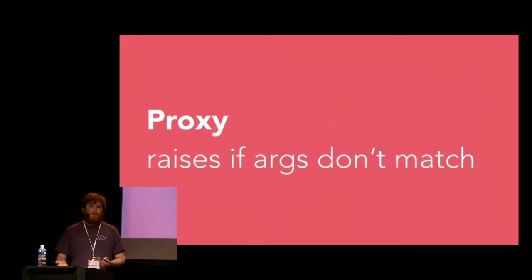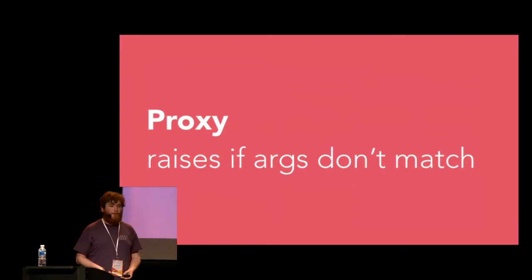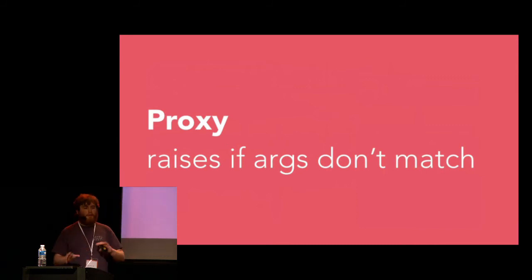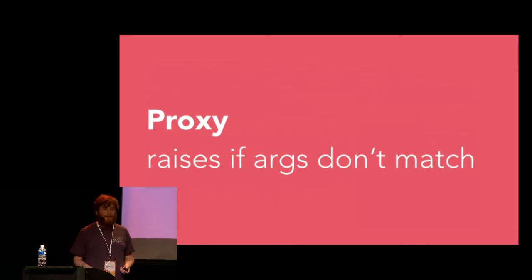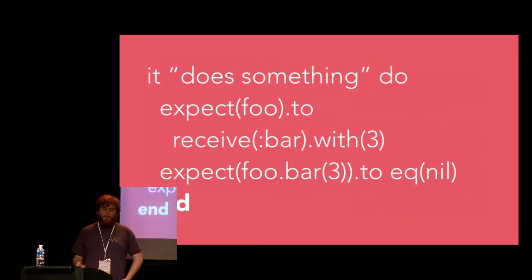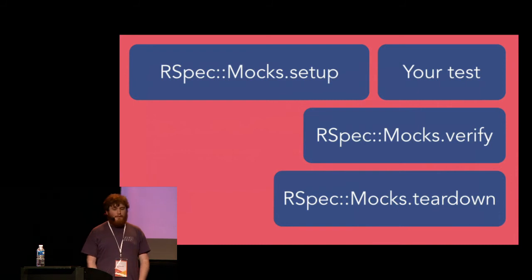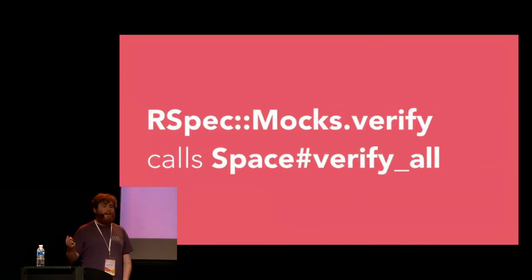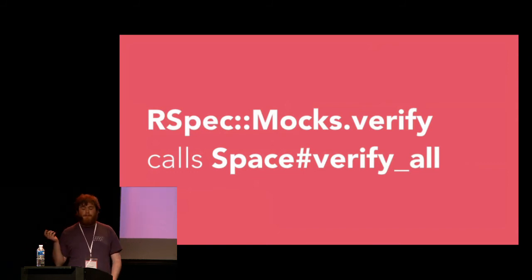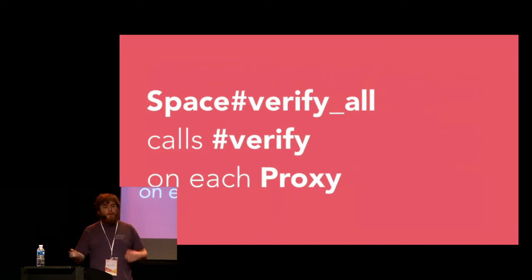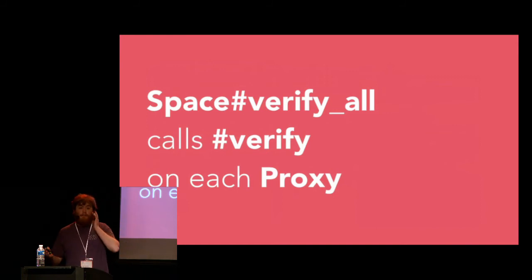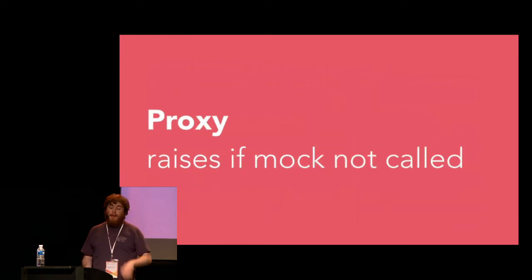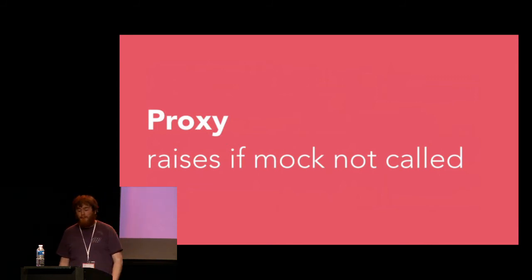Test failures are reported by raising exceptions — that's consistent across Minitest and all other testing frameworks you might find. That means they're interoperable: you can load RSpec mocks into Minitest, or load Minitest's testing into RSpec, and they'll all work with each other. At the end of the test, we go through RSpec mocks verify. Because we created a mock expectation instead of a simple stub, space verify all delegates through to verify on each proxy, which checks how many times each expected method was invoked and raises an exception if the mock wasn't called.